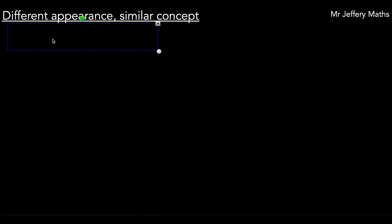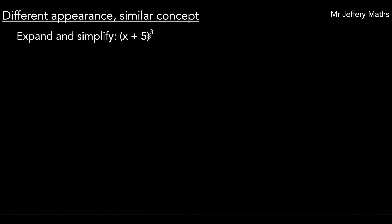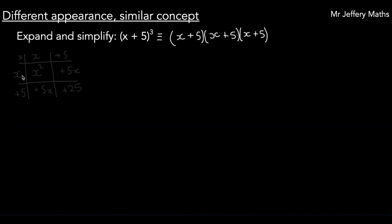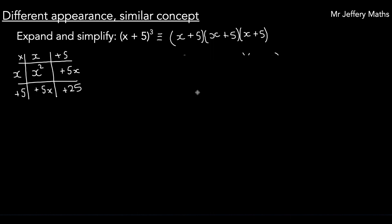In the next part of the video, we're going to look at an example where the expression looks different but the question is still essentially the same. For example: expand and simplify (x plus 5) all cubed. This means x plus 5 multiplied by x plus 5 multiplied by x plus 5. So we multiply the first two brackets together to get x squared plus 5x plus 5x plus 25, which simplifies to x squared plus 10x plus 25, and then we multiply that by x plus 5.